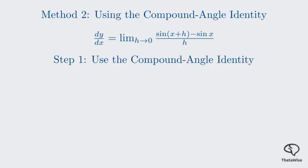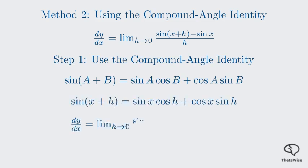We use the compound angle identity, sine(a+b) equals sine a cosine b plus cosine a sine b. Applying this to our expression, with a being x and b being h, we get sine x cosine h plus cosine x sine h. So, our derivative expression becomes the limit of sine x cosine h plus cosine x sine h minus sine x, all divided by h.